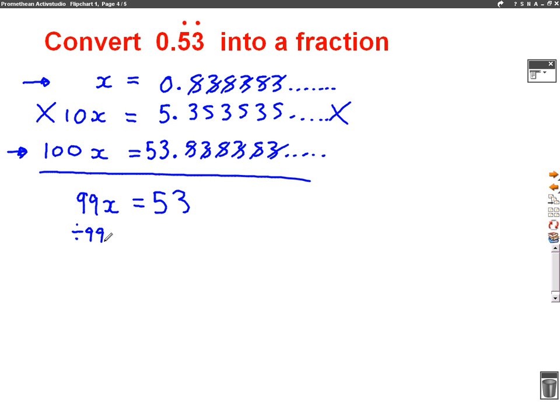So we're going to divide by 99 on both sides to get x on its own. We'll get x equals 53 out of 99, which is our fraction. So we've now successfully changed 0.53 recurring into a fraction, and we've changed it into 53 out of 99.